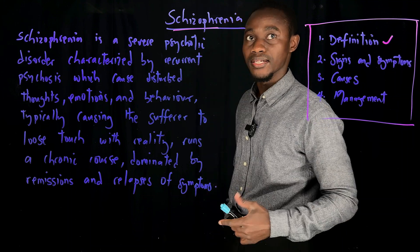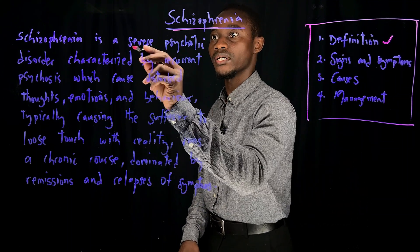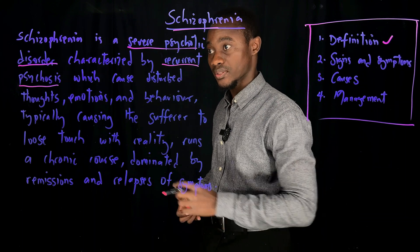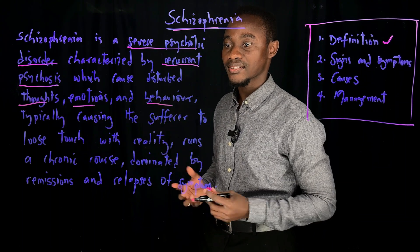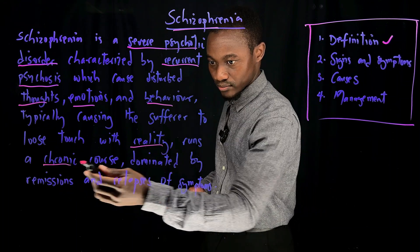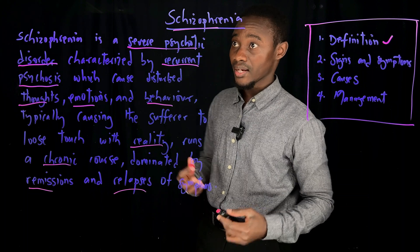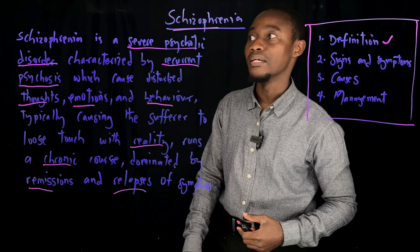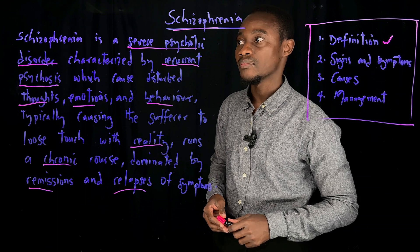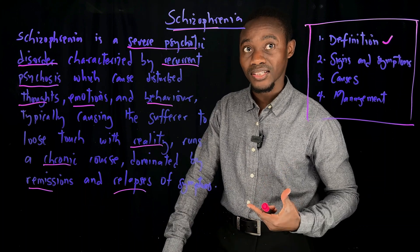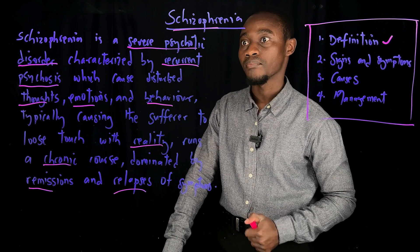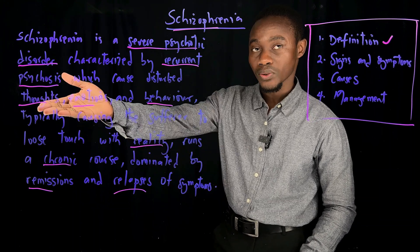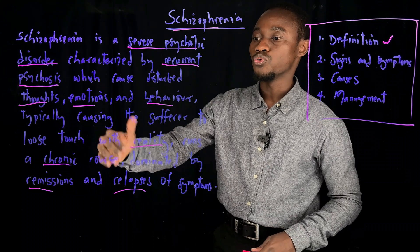Let's explain the keywords in that definition. A psychotic disorder is any disorder where psychosis is implicated as the main clinical feature. When we say a severe psychotic disorder, that means a disorder with psychosis which causes a lot of dysfunction to the individual. The psychosis present in Schizophrenia is recurrent — it happens repeatedly — and causes disturbed thoughts, emotions and behavior, typically causing the sufferer to lose touch with reality.